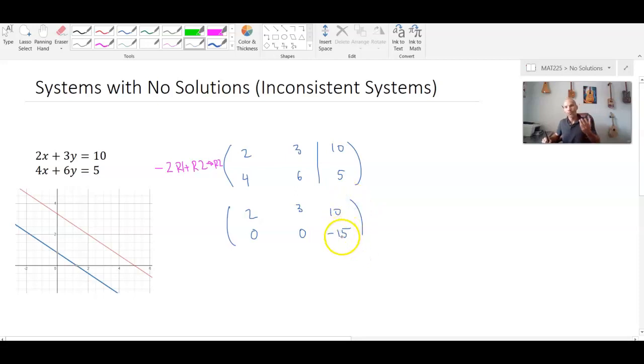At this point, we're anticipating a problem. We see that for the coefficients of x and y in the second equation, we have 0x plus 0y equals negative 15. And this suggests once again that 0 is equal to negative 15, which is a big false statement.